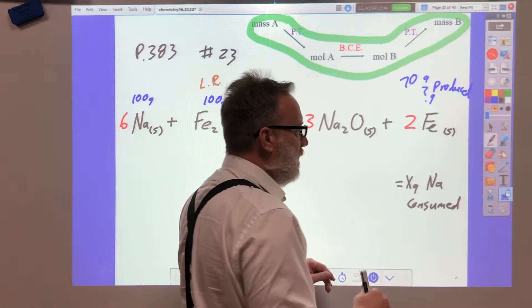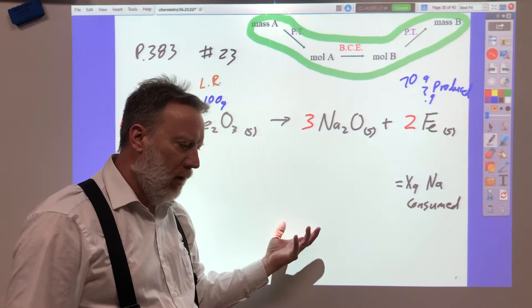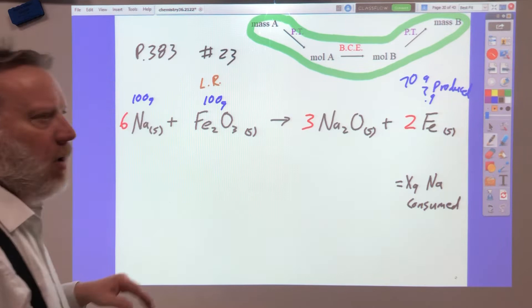equals x grams sodium consumed. Now that doesn't get us the answer, but the answer is how much left over. But if we start with 100 and we figure out how much is left over, all we got to do is subtract those and the rest is excess. That's easy. Students have a really hard time, how do you find this? This is easy. Don't let that easy step throw you off.